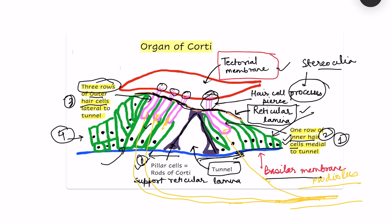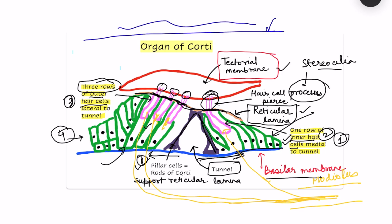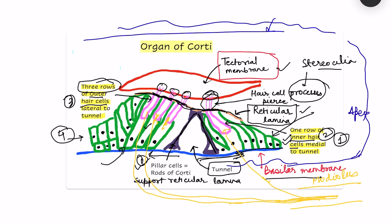Whenever a pressure wave arrives, it travels via the apex of the cochlea into the scala tympani. This causes vibration of the basilar membrane.